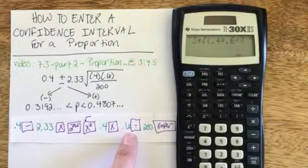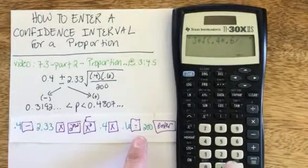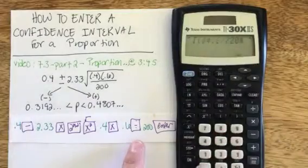Divided by, don't hit any more parentheses because it'll close off your square root. 200, whoops, 200, not 20.